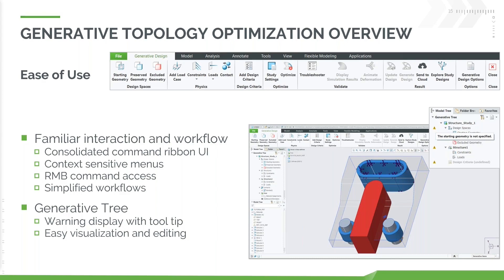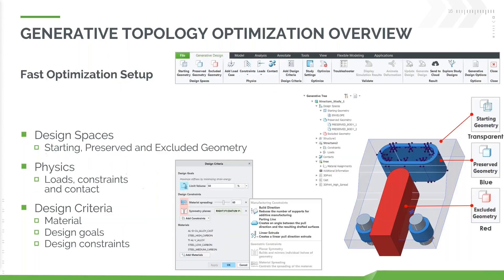It runs in the ribbon the same way as all normal Creo functionality. We've got a generative tree that shows us information, and we can see all of that in the native Creo UI. One of the great things about that is you're not having to learn a separate tool. We go in and it's very quick to set up.